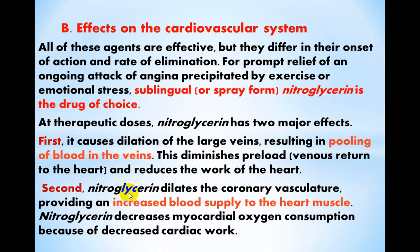The second effect: after therapeutic doses, nitroglycerin dilates the coronary vasculature, providing an increase of blood supply to the heart muscle. So nitroglycerin decreases myocardial oxygen consumption because of decreased cardiac work, and also because of increased blood supply to the heart muscle and pooling of blood in the veins — all of which leads to relief of angina and improved oxygen supply to the myocardium.